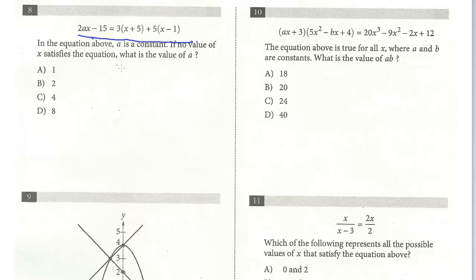Let's just multiply it out. This is another familiar type question. So I will distribute on the right side, we'll just copy the left side. So 2ax minus 15 equals 3x plus 15 plus 5x minus 5.